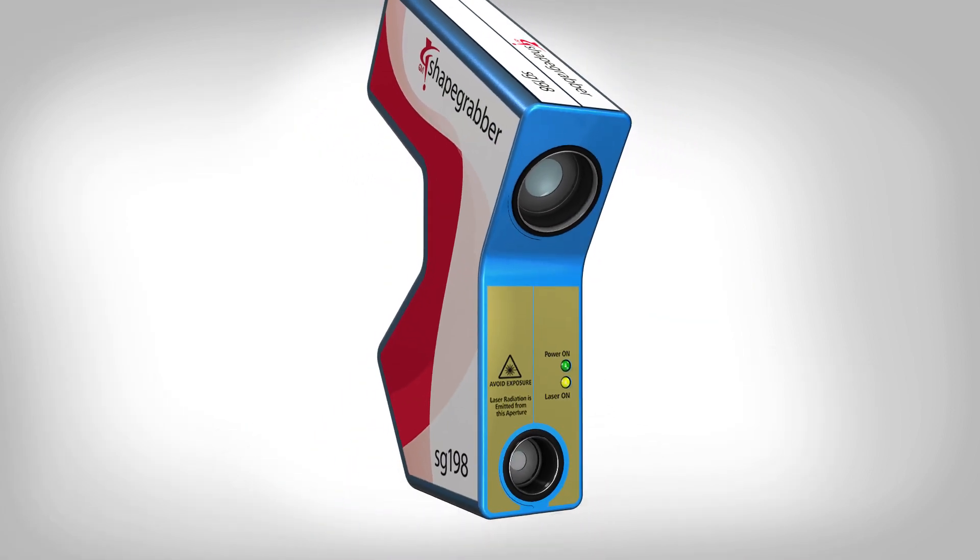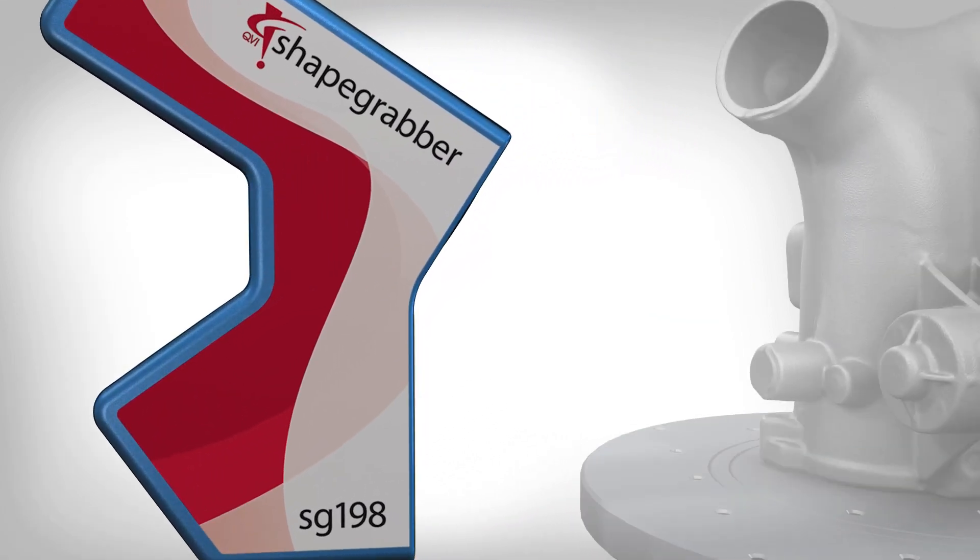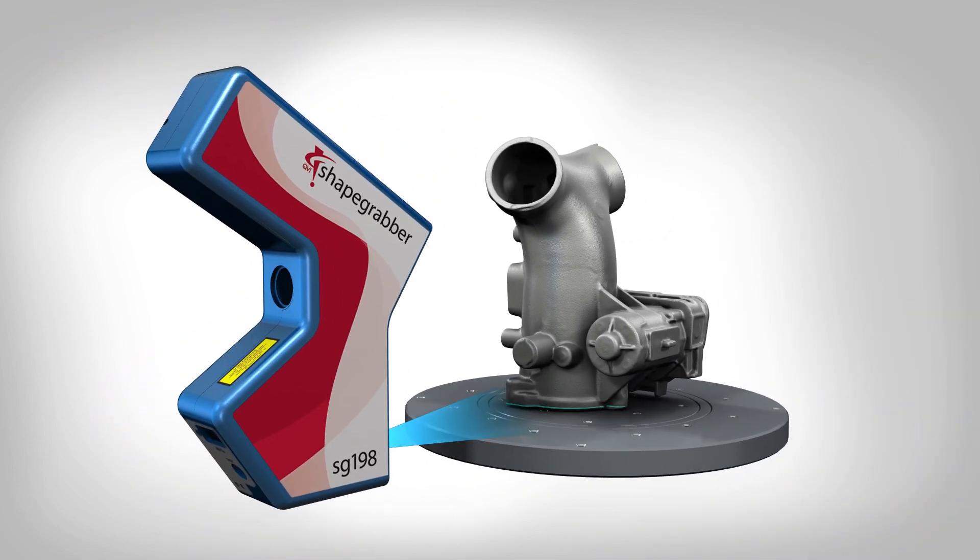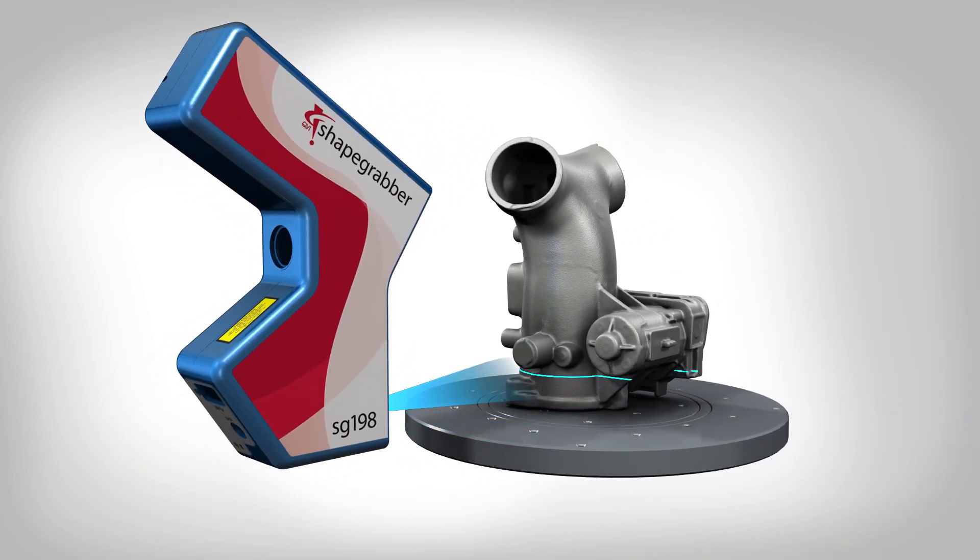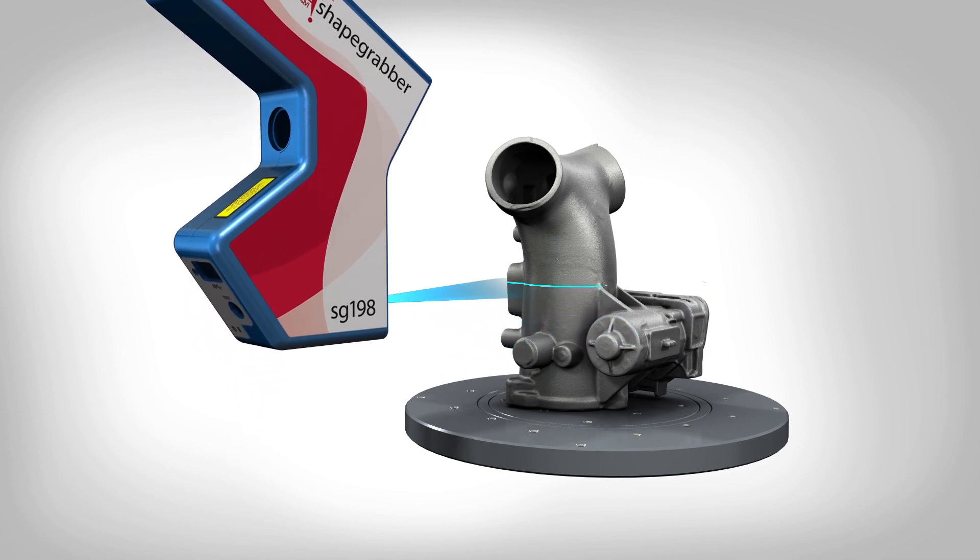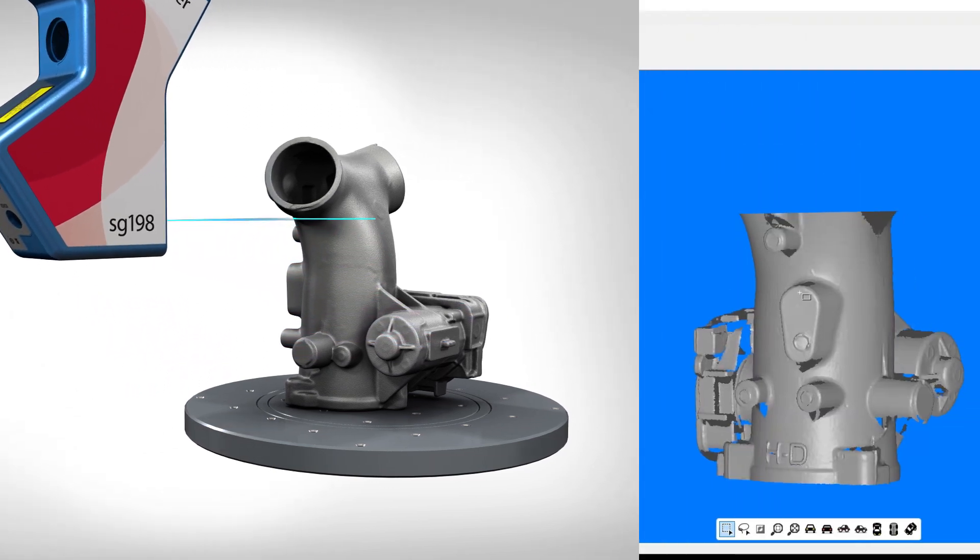The built-in high-speed camera and custom lens deliver a combination of depth resolution and data densities for the most challenging applications, allowing fast and easy full part coverage when measuring complex shaped parts.